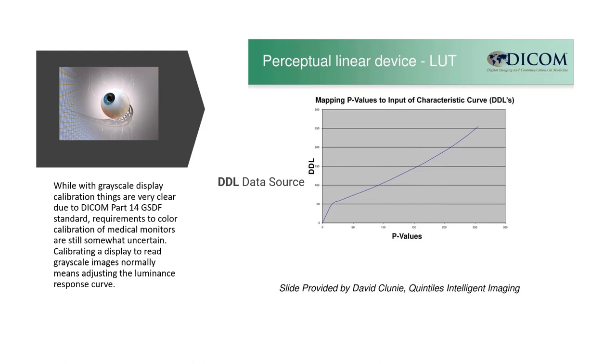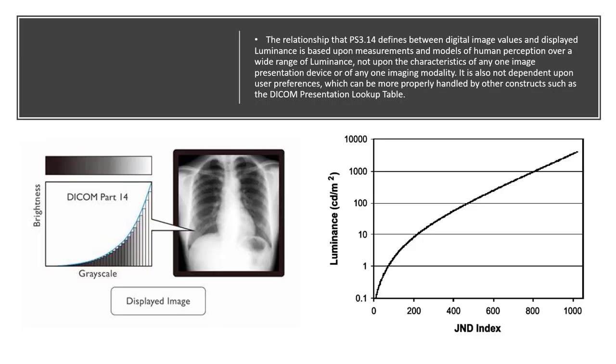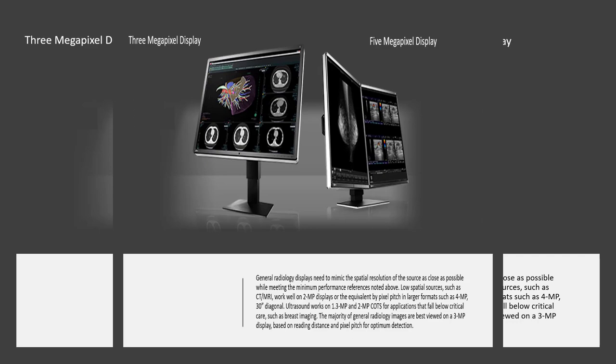Calibrating a display to read grayscale images normally means adjusting the luminance response curve of the monitor to reflect what are called just noticeable differences, or JNDs, which is the differences just noticeable to the human eye, to create P values or presentation values. This monitor shows an image created with P values, which were based upon the just noticeable differences in luminance index that we see to the right. To create the image we map these grayscales based upon lookup tables for the specific image and position.